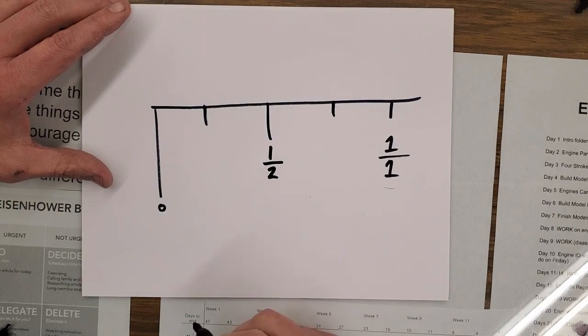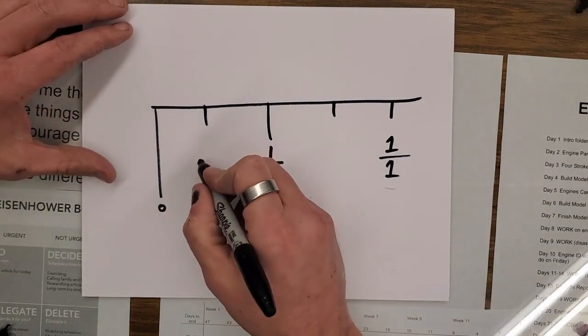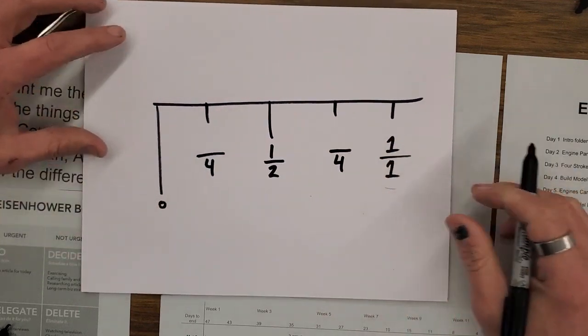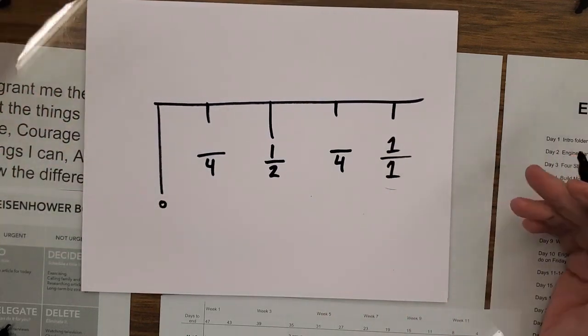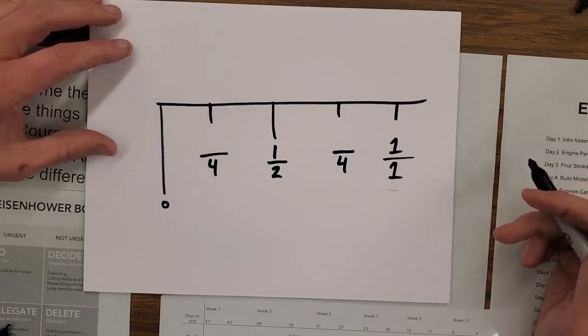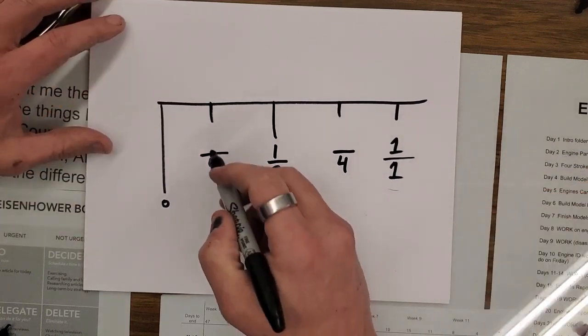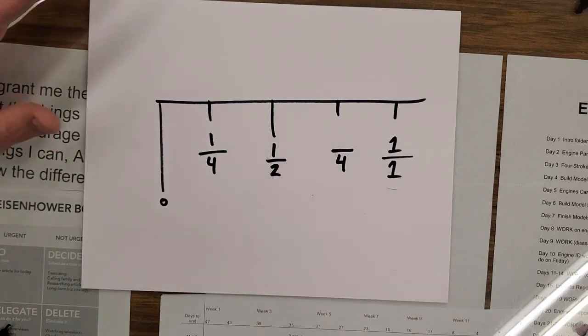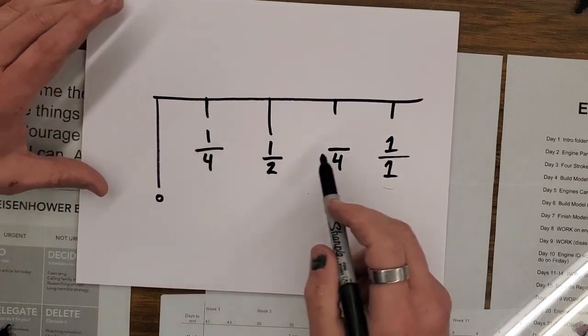So again, two times two this time is going to be four. So the denominator for these two increments is going to be four. So these are fourths. We always start with one.